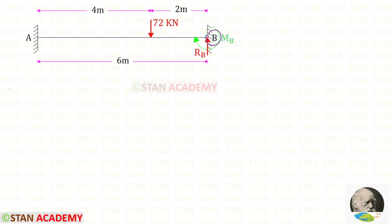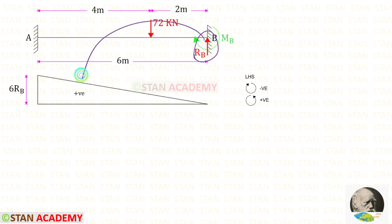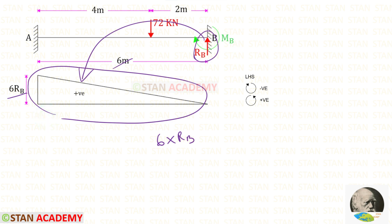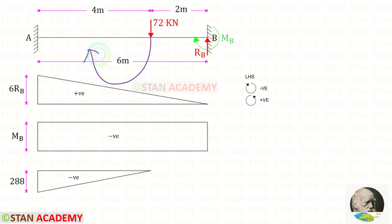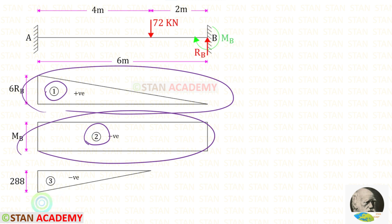From point B about point A, we are going to find the bending moment values. In this case we have to follow the left-hand side rule. Clockwise will be negative and anti-clockwise will be positive. First let us take RB — it is acting in the anti-clockwise direction, so it will be positive, and the distance is 6. So we get 6RB, and the diagram will be in the shape of a triangle. Now let us take MB — it is acting in the clockwise direction, so it will be negative, and the diagram will be in the shape of a rectangle. Now the point load 72 is acting in the clockwise direction, so it will be negative, and the distance is 4. 72 into 4 gives us 288. Let us label these diagrams as number 1, number 2, and number 3.